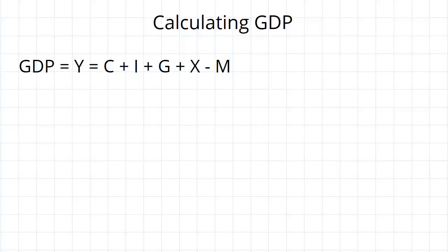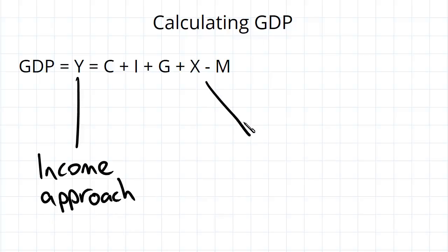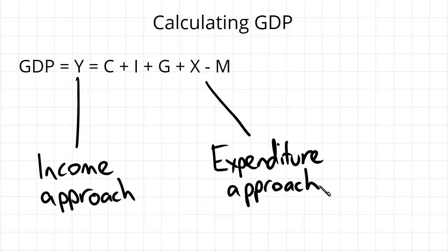So using this, we can either calculate aggregate income in order to get GDP under the income approach, or we can calculate aggregate expenditure in order to get GDP under the expenditure approach. So let's look at each individually.